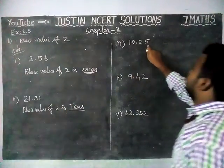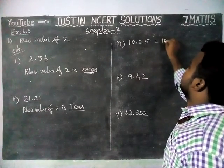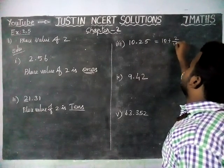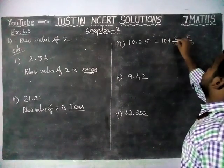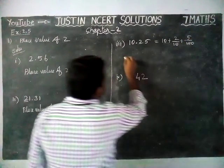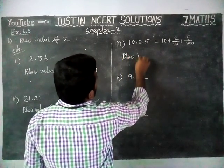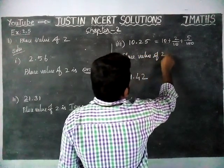Place value of 2 is tens place. And then, 10.25, this can be written as 10 plus 2 by 10 plus 5 by 100. So, place value of 2 is equal to tenths place.